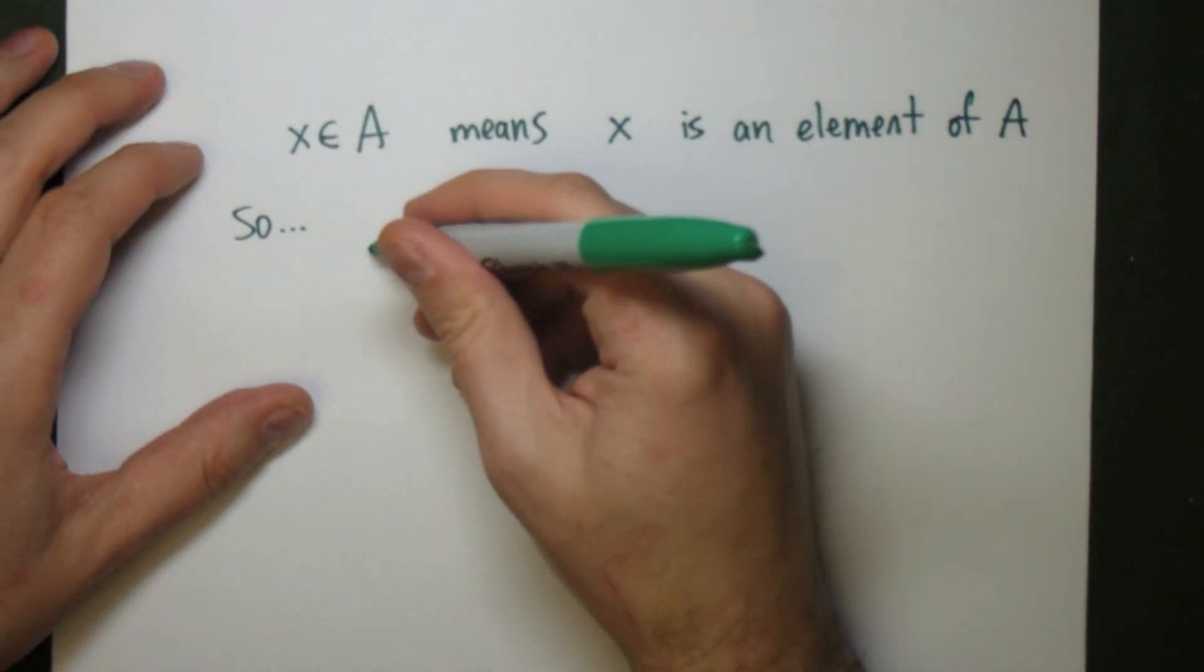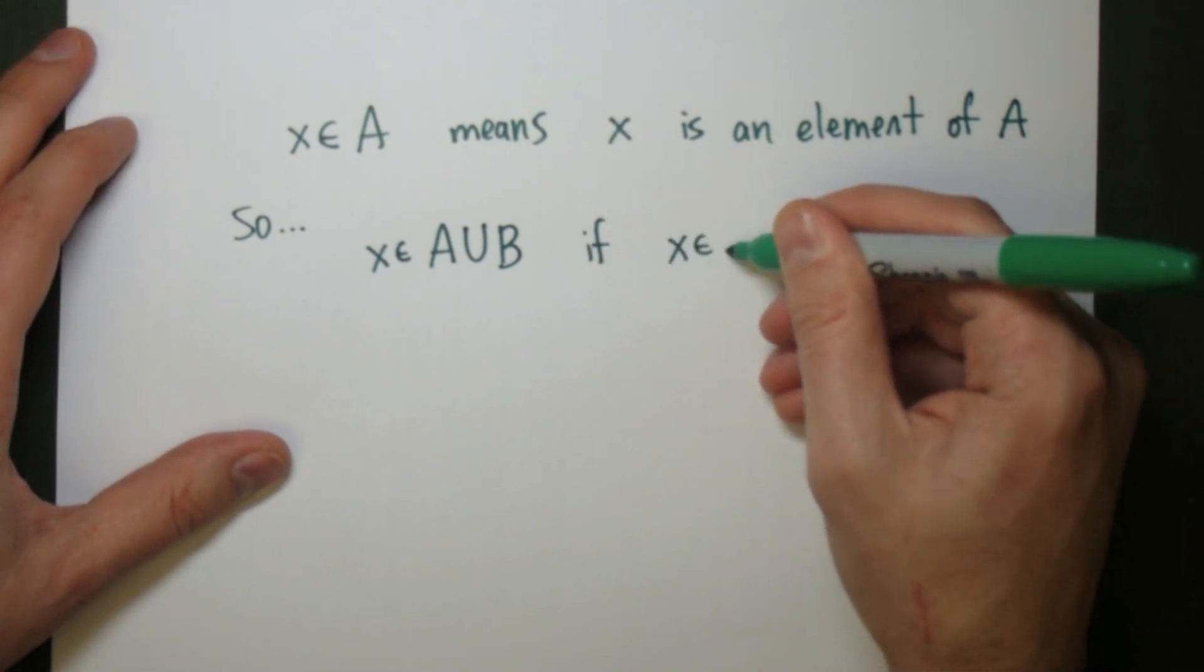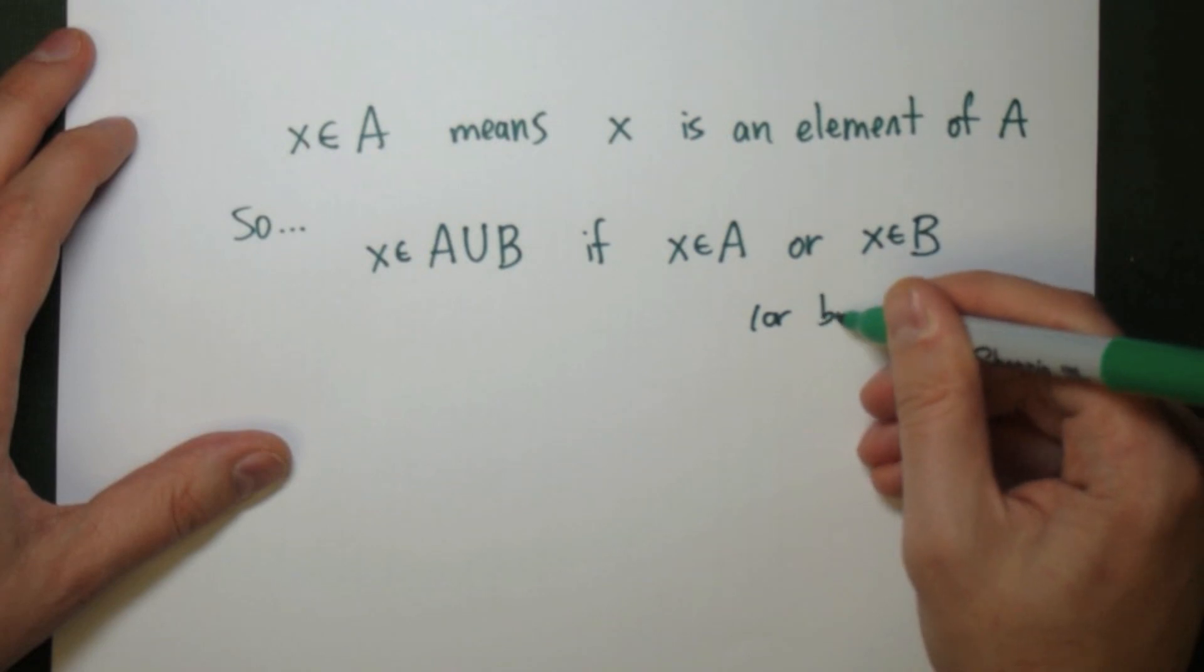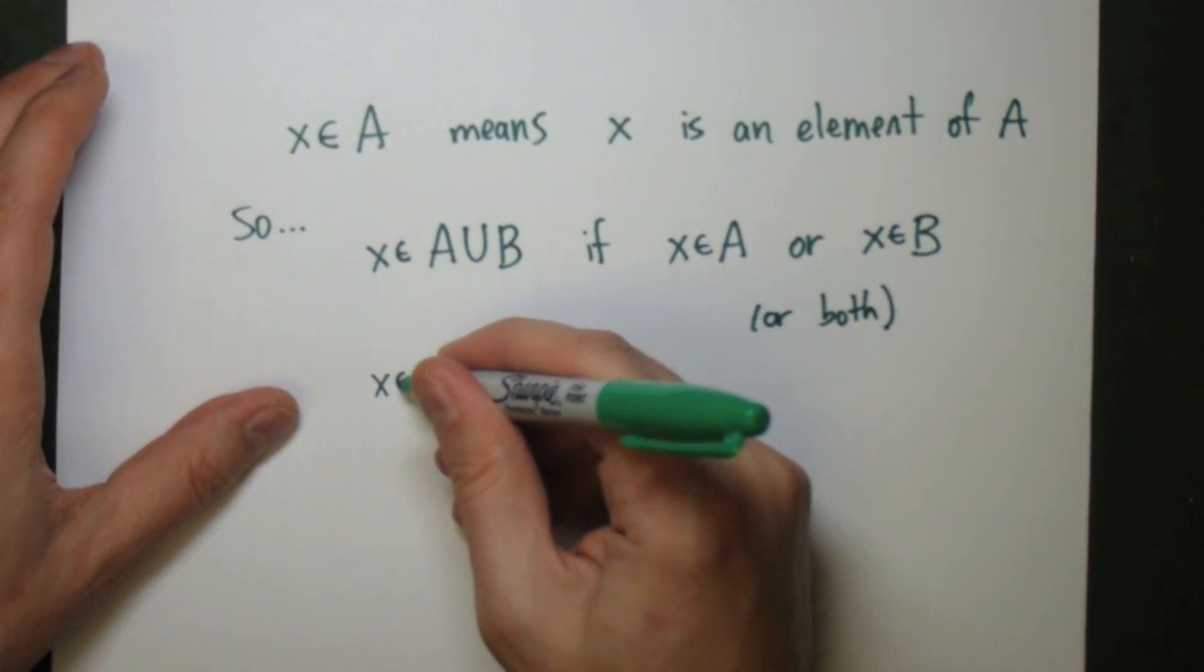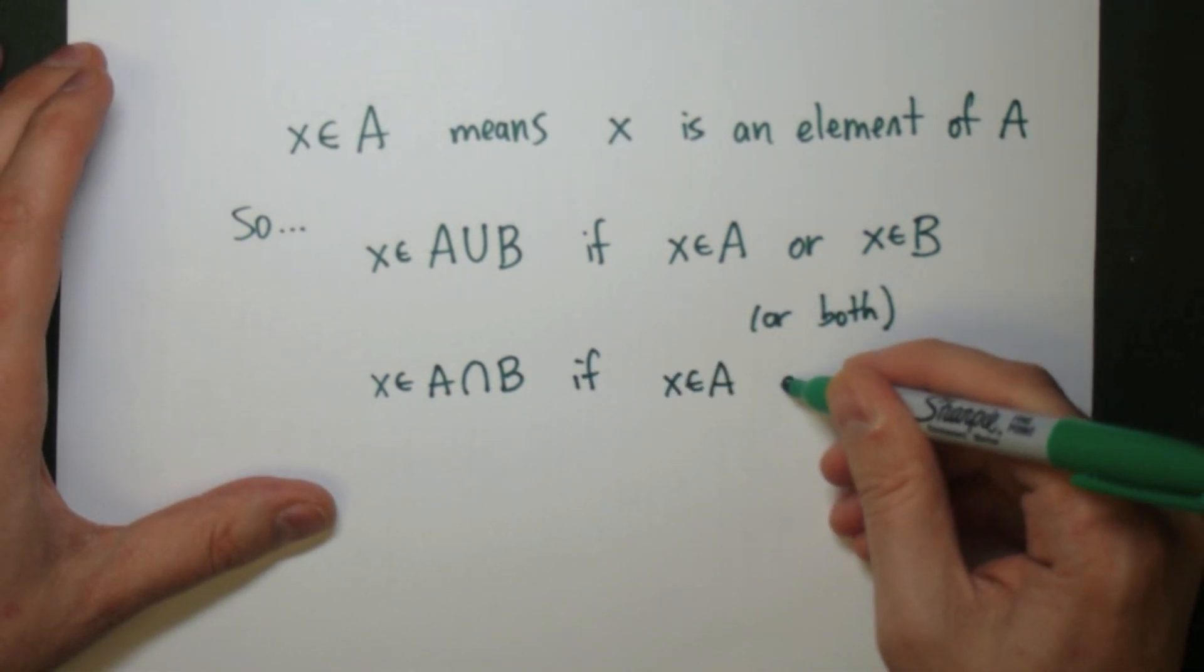So if we actually look at the union and the intersection and what they mean, x is going to be an element of the union if it's either in one or it's in the other, or it could possibly be in both. Whereas x is in the intersection if x is in A and x is in B.